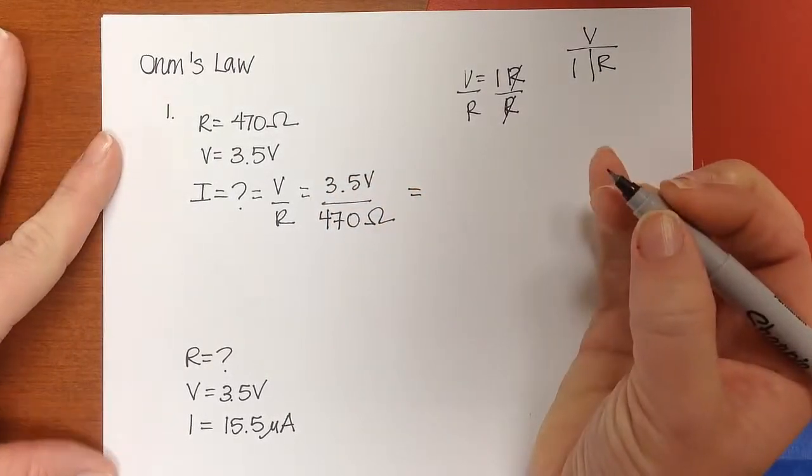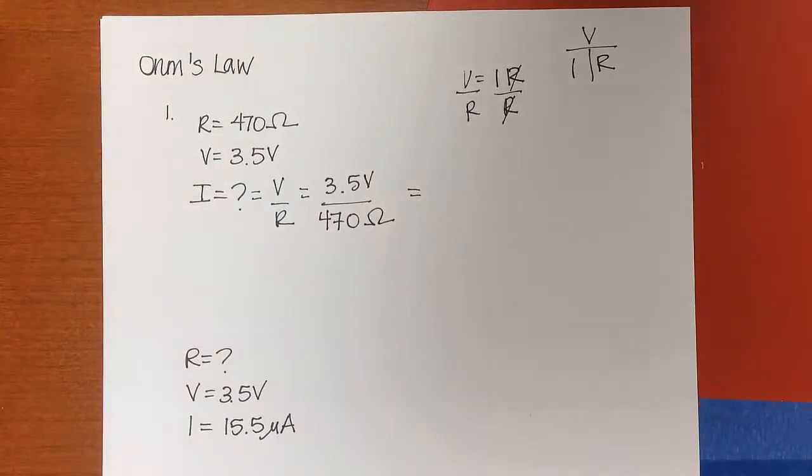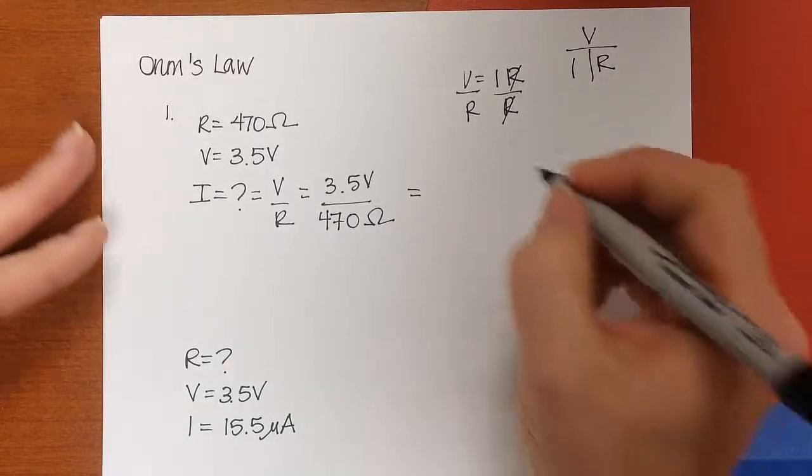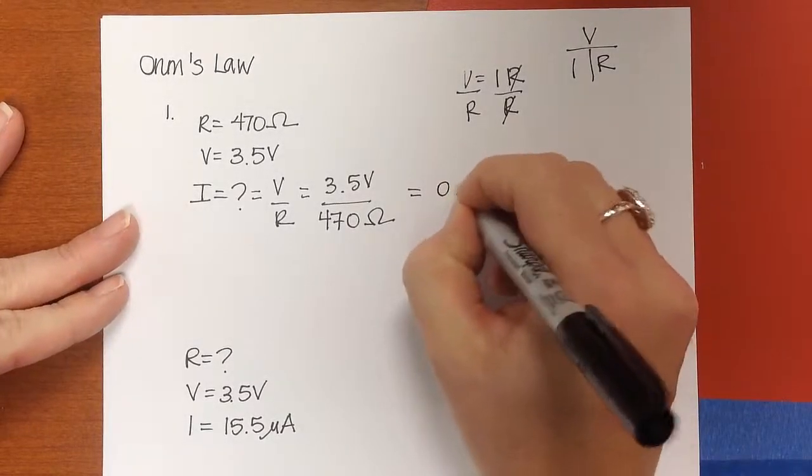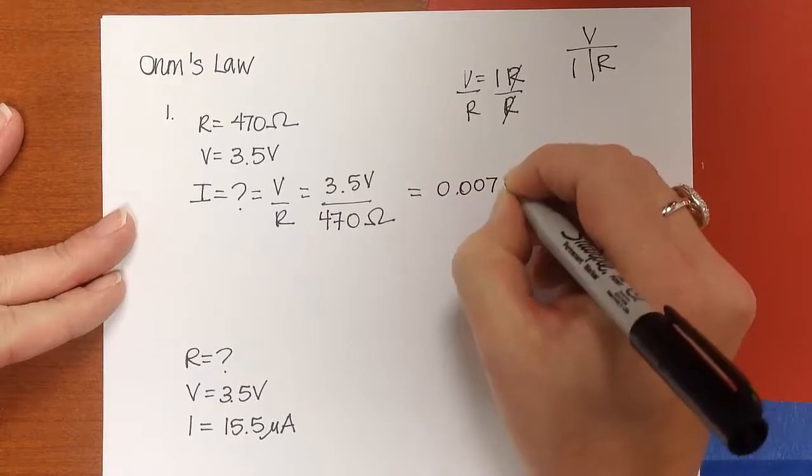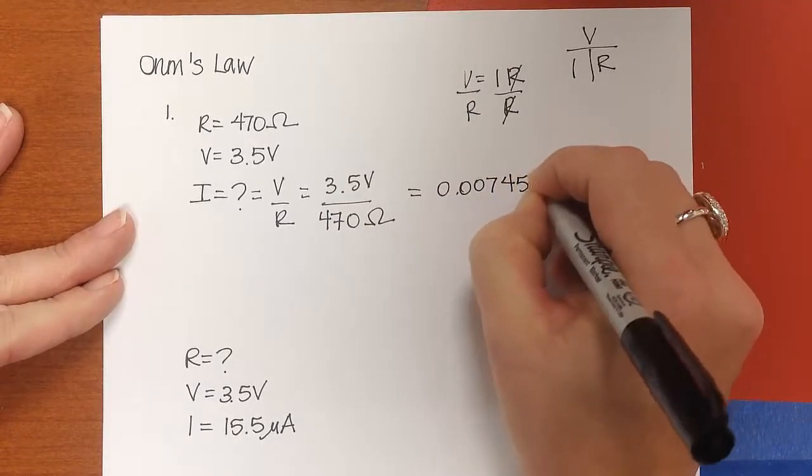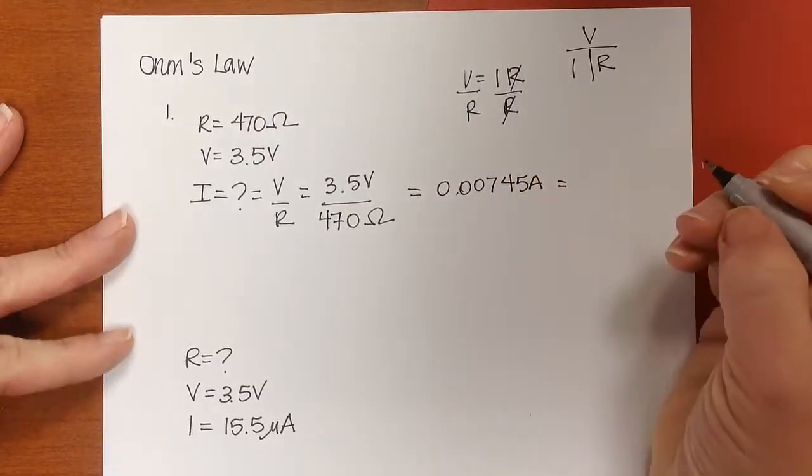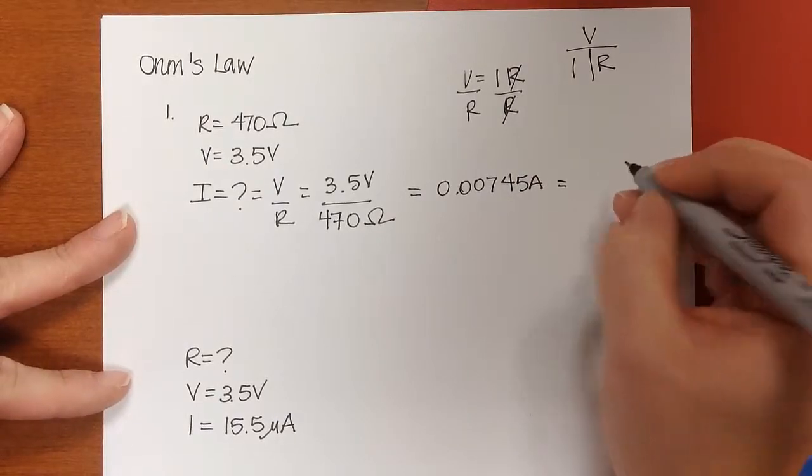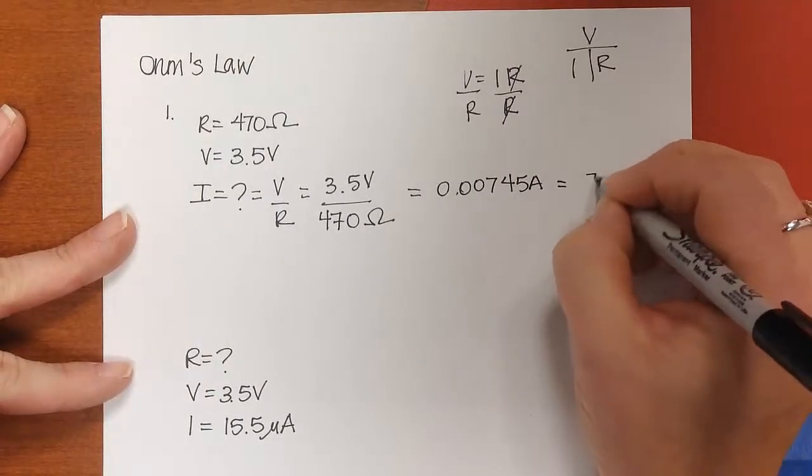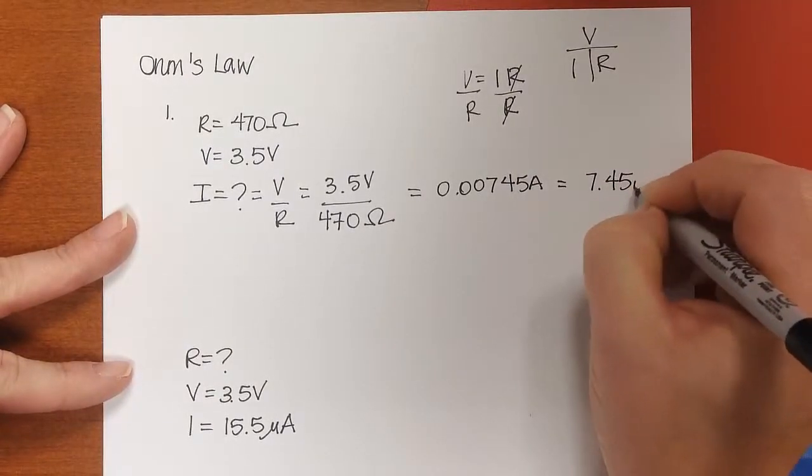And as we do that, then we'll get 0.00745 Amps. And if we change that to Engineering Notation, that is going to be 7.45 milliamps.